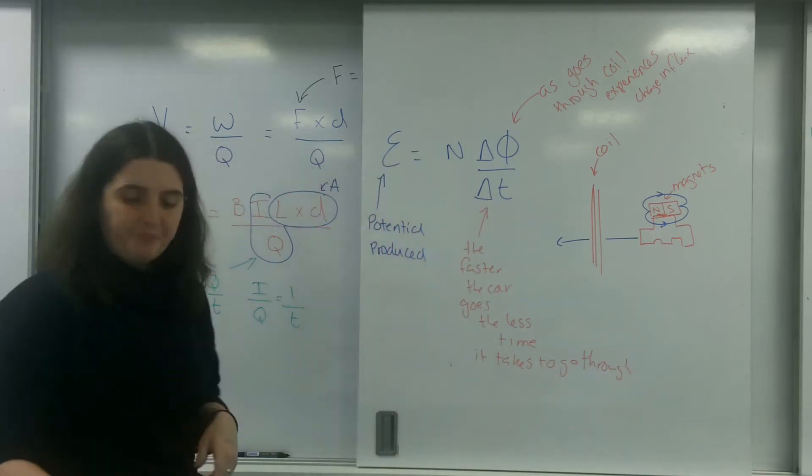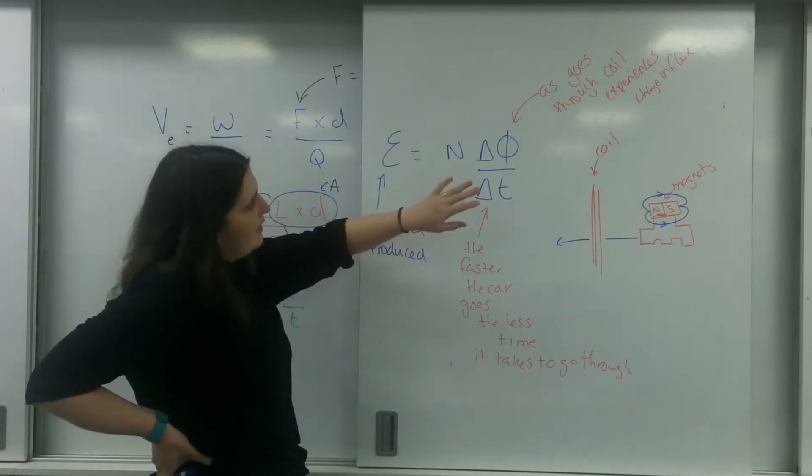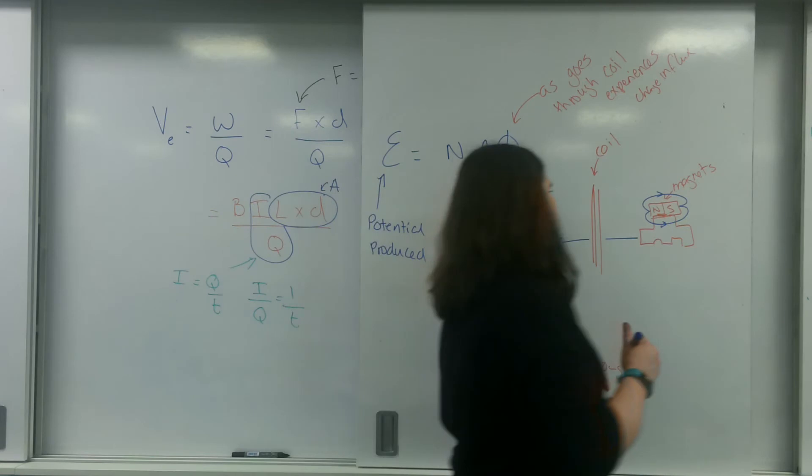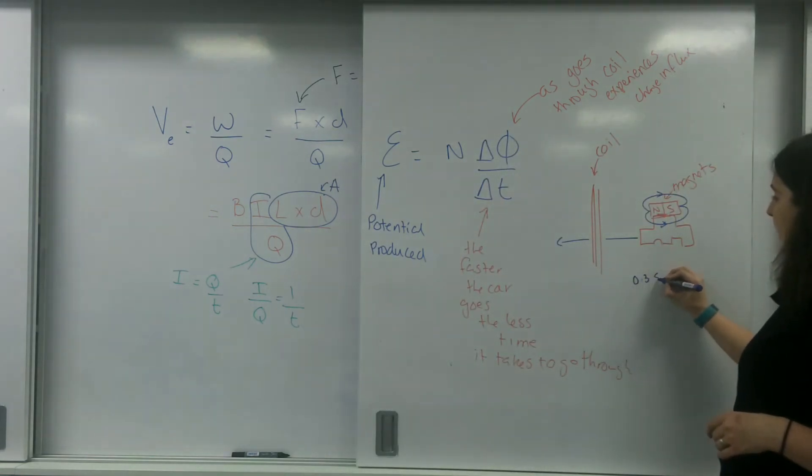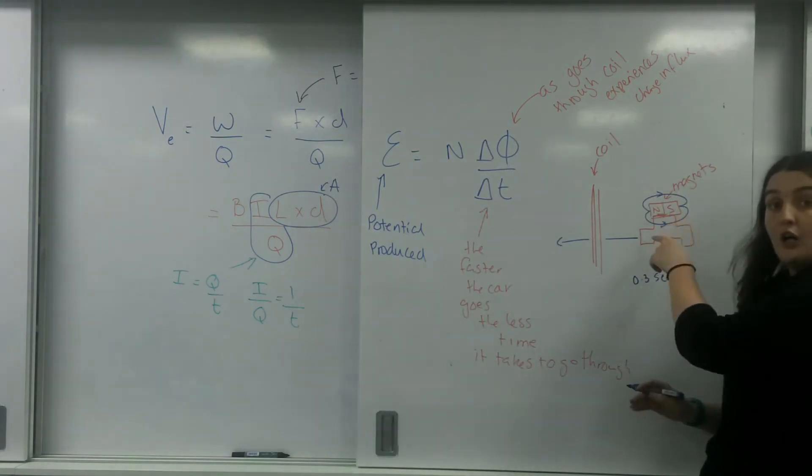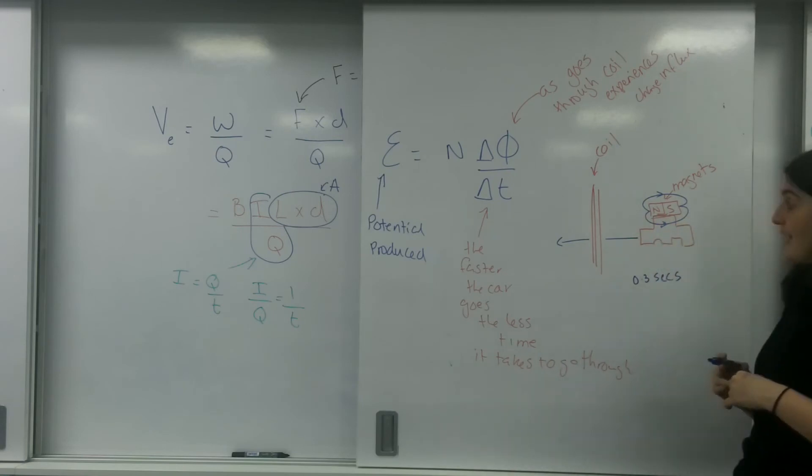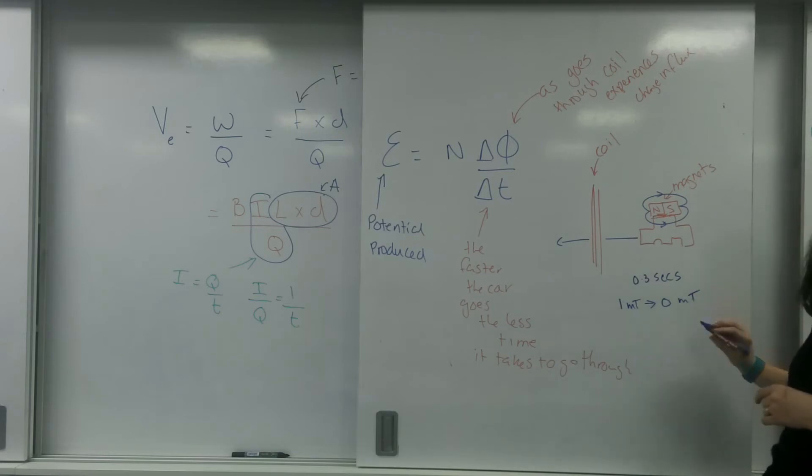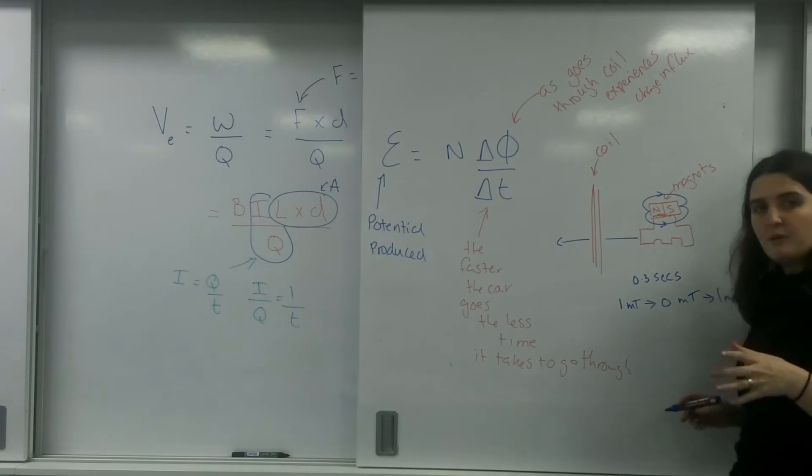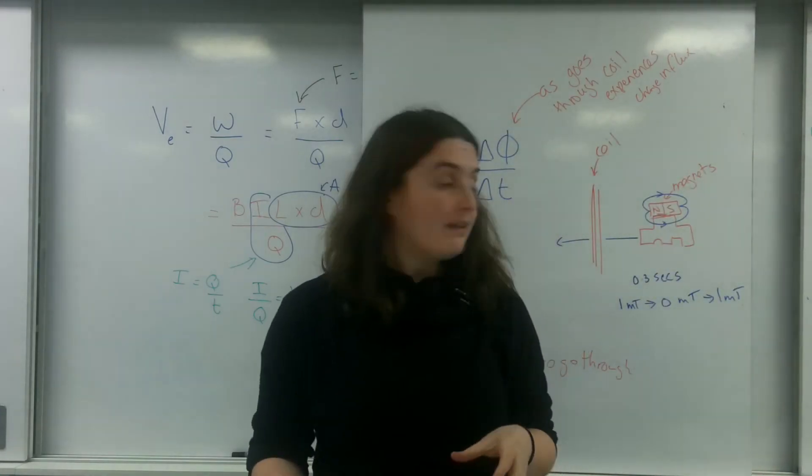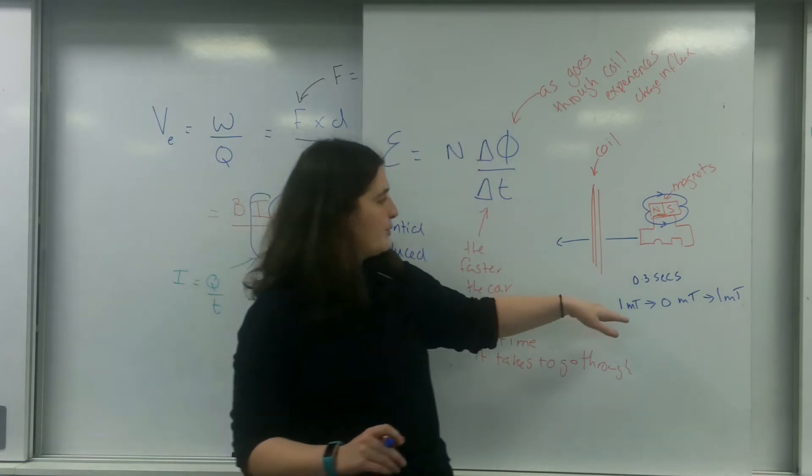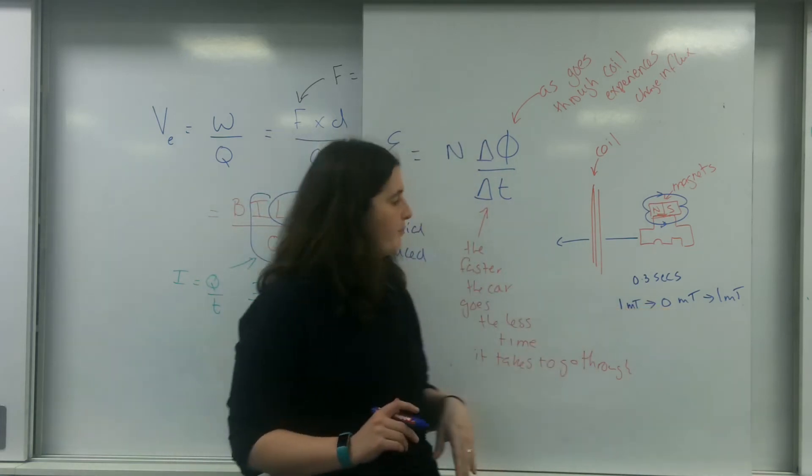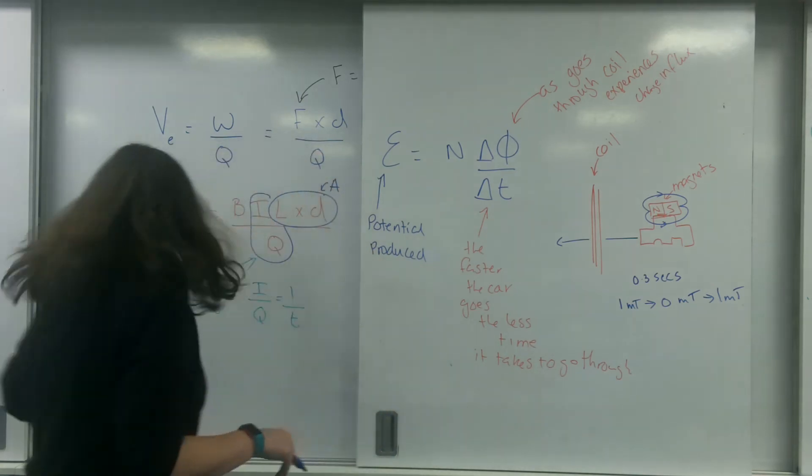So what does it need here? For numbers, let's say it takes 0.3 seconds for the car to fully go through. And in that time, the car experiences 1 millitesla down to 0 millitesla and then up again to 1 millitesla. Here, the maximum EMF it is going to generate is going from this 1 to this 0. So I'm going to do some calculations for this.